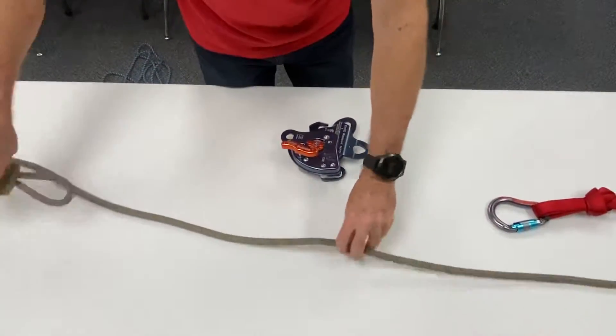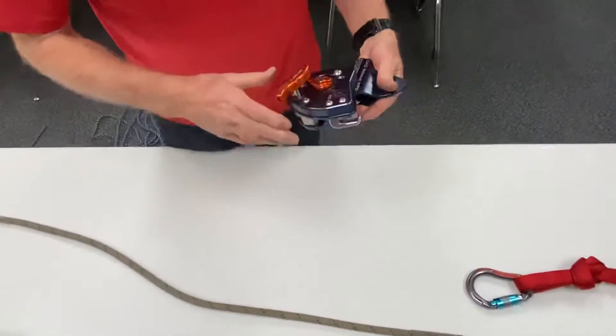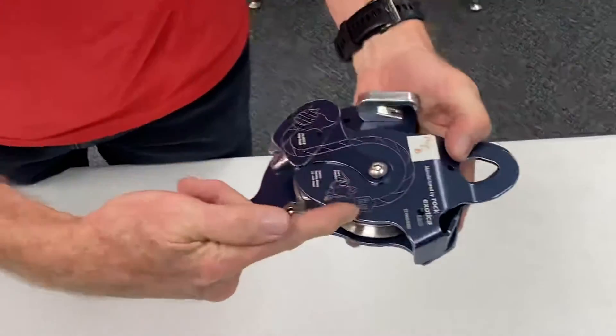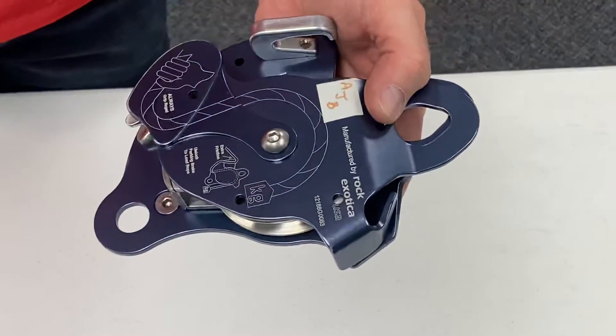And then we want to load this, thread it through our MPD. So we look on the MPD, we turn it over, we can see that this side needs to have going to the load and this side needs to be going to our hand for the belay.